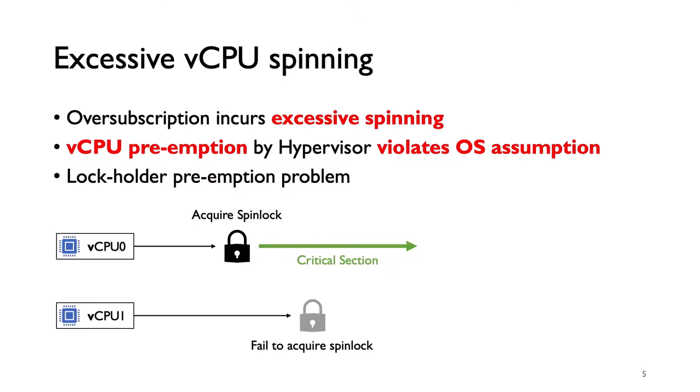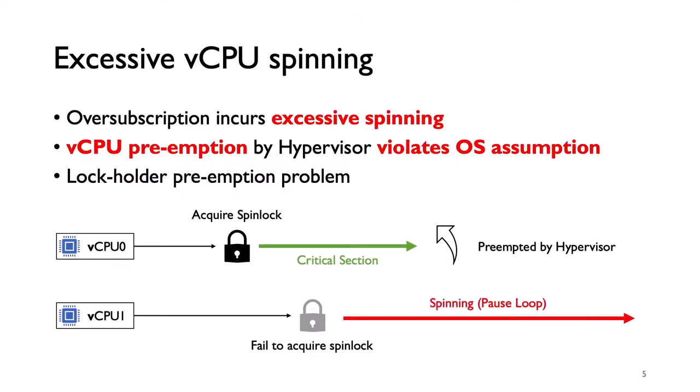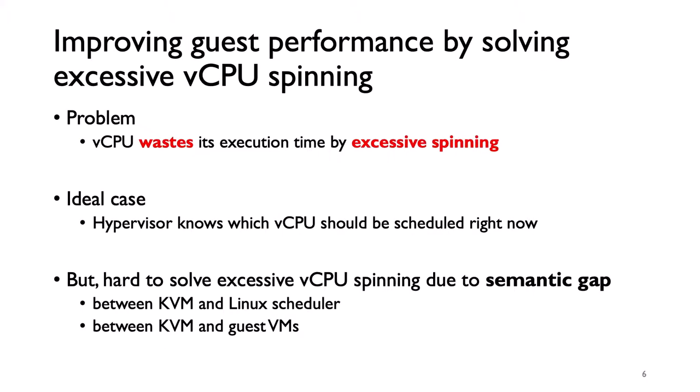However, in a virtual environment, the assumption is not always kept. If virtual CPU0 is preempted by the hypervisor after it acquires a lock, virtual CPU1 spins forever. This problem is called the lock-holder preemption problem.